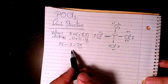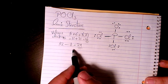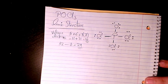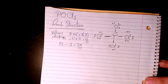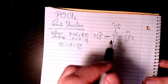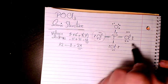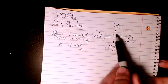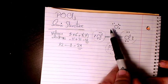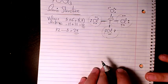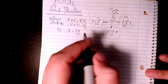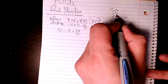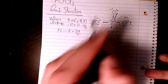Then we figure out the octet rule. It is satisfied for all the chlorine atoms because we have two, four, six, eight. But for phosphorus we don't have a full octet, and also for oxygen. We can see that we can place a double bond between the phosphorus and oxygen.